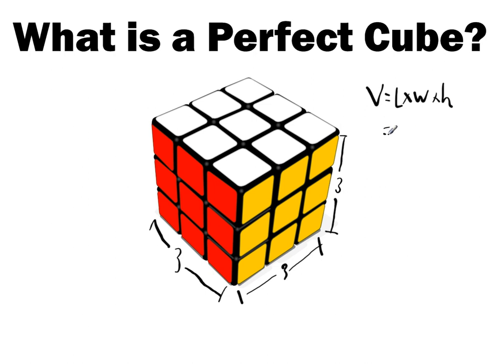So this guy would be three times three times three, which is three cubed. Because you have three different things. And that's where the cube comes from. So that's why we call it cube.